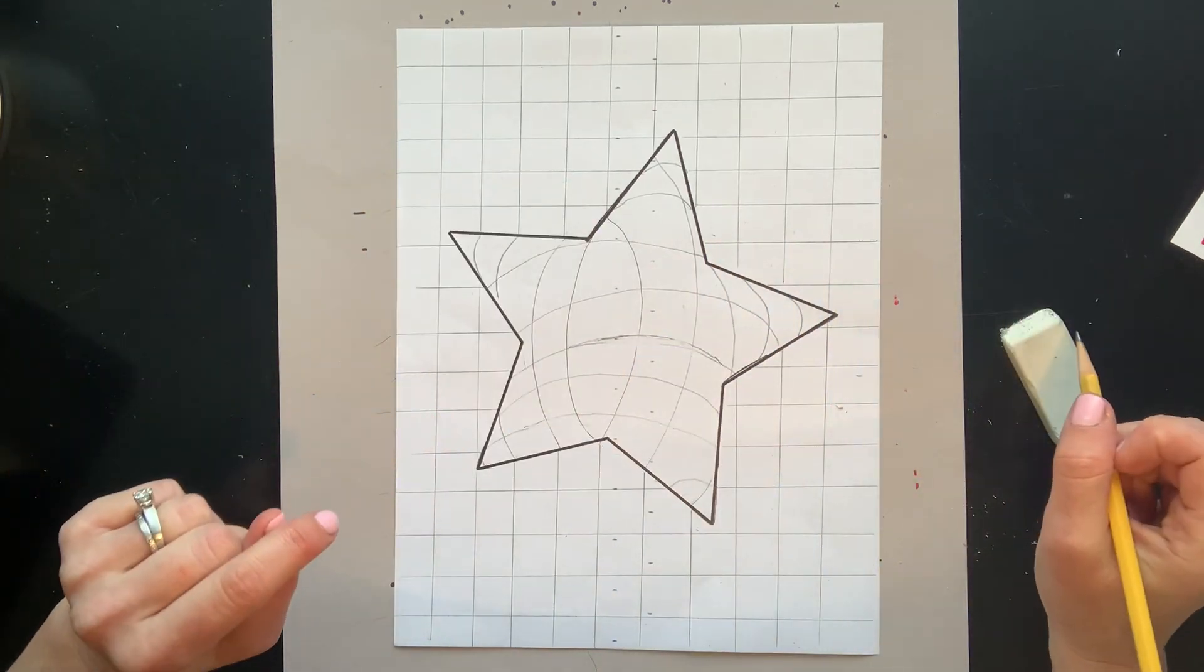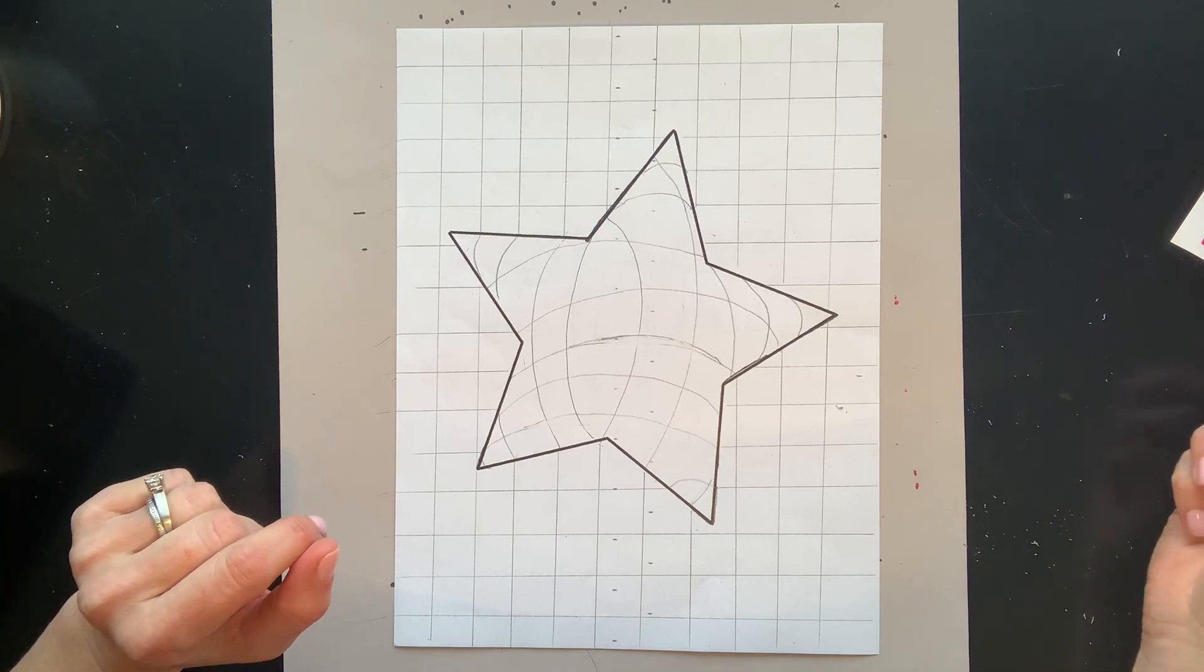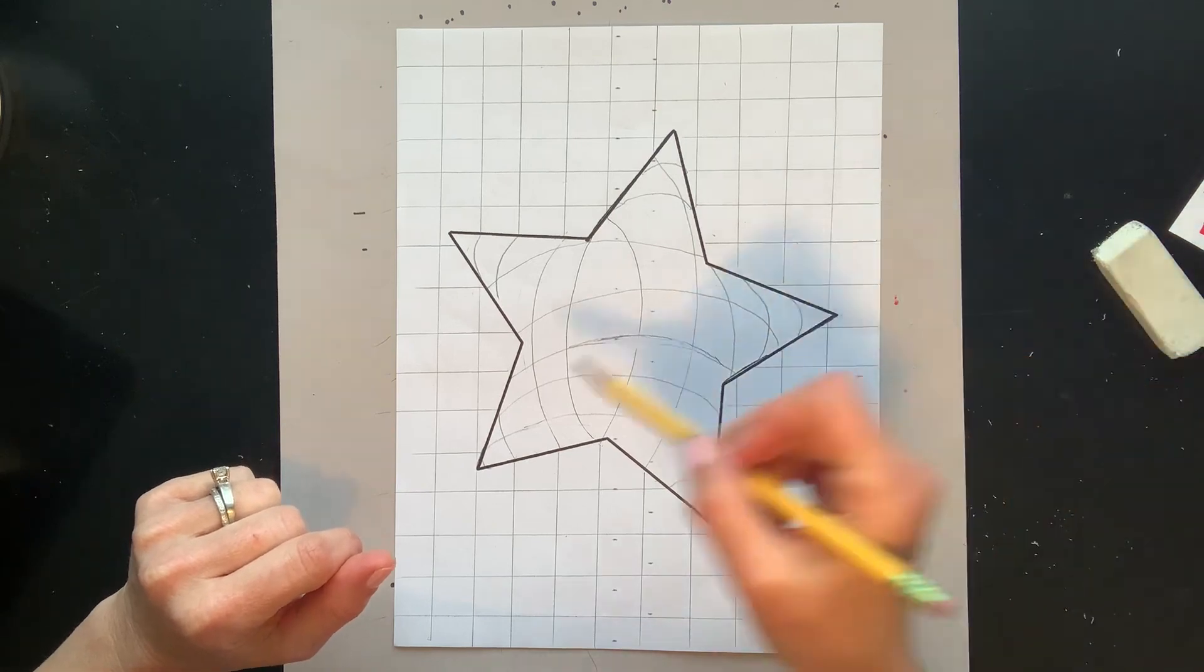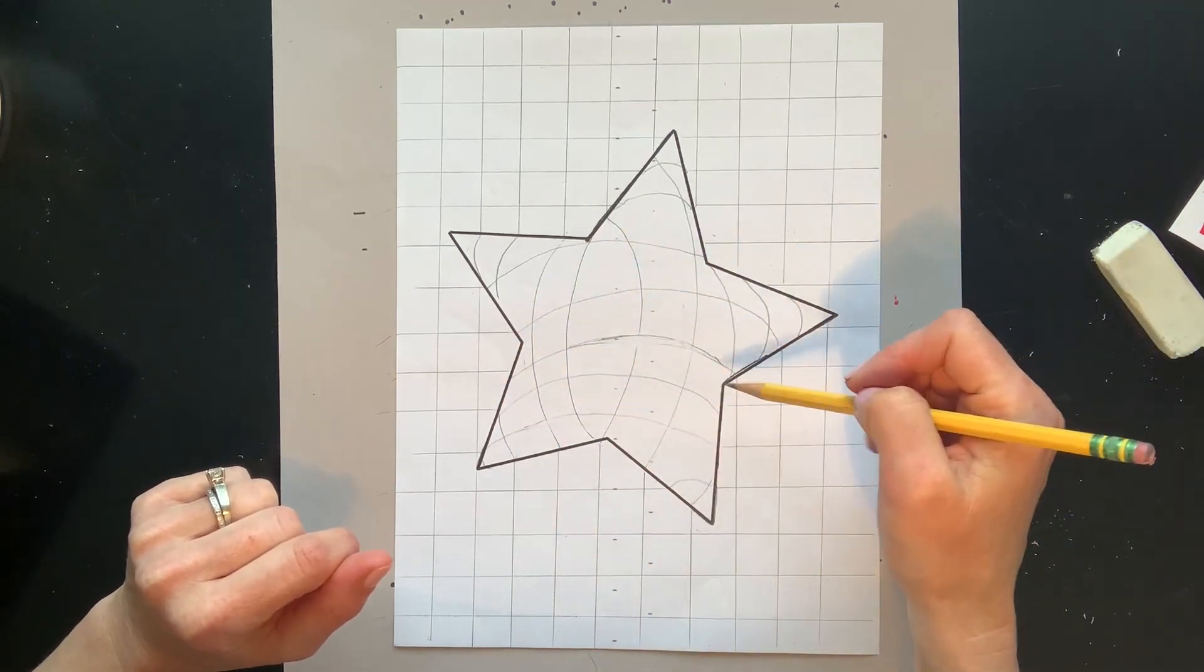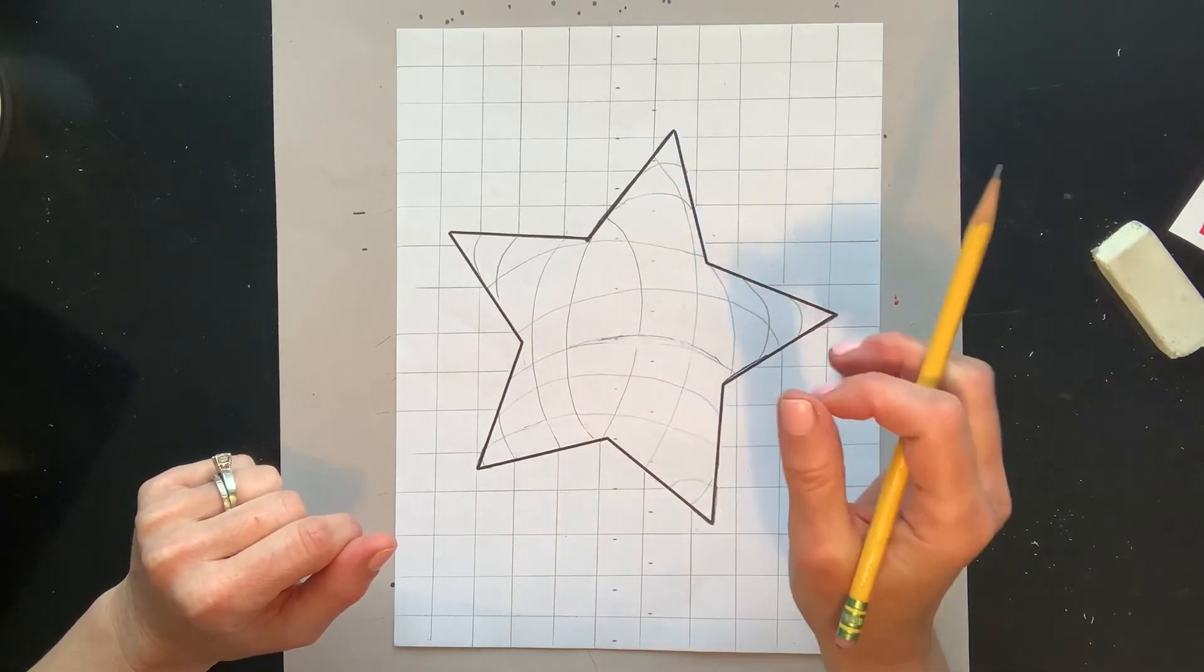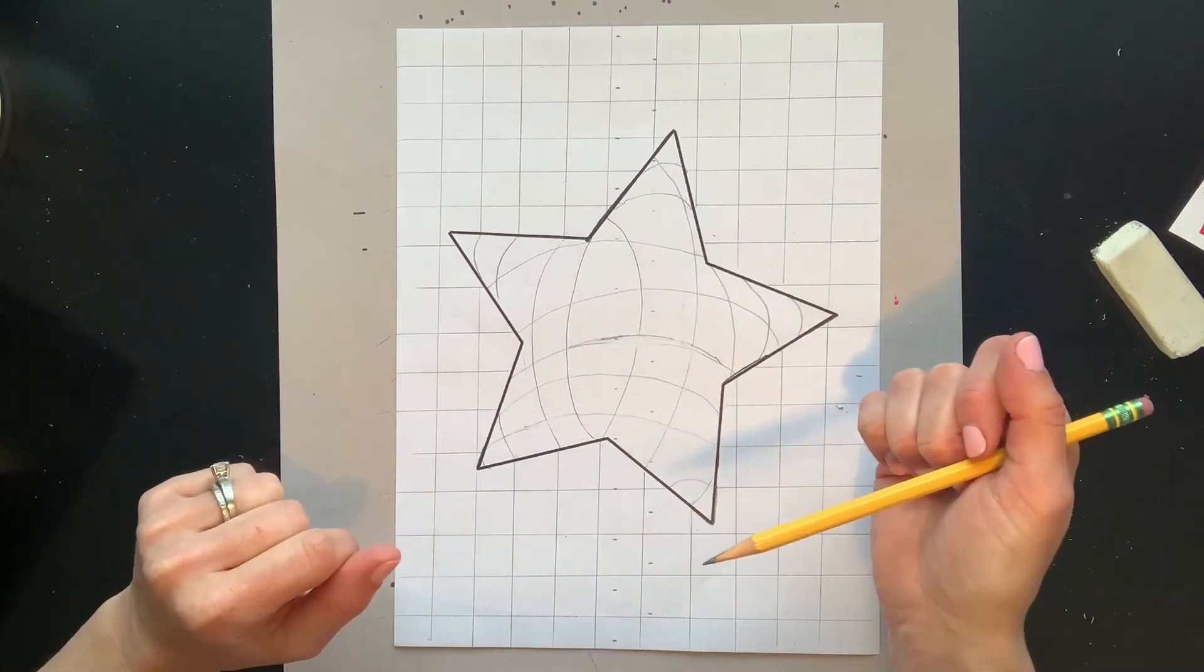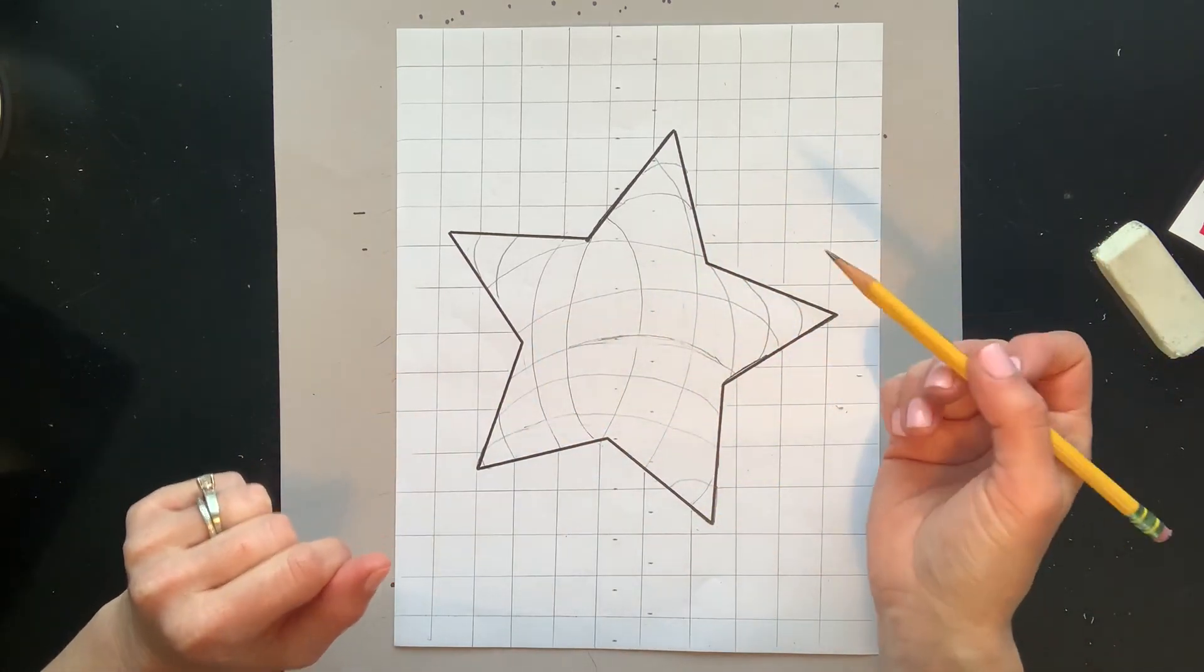Now what you're going to do is you're going to turn this into Google Classroom. I'm going to check your lines to make sure you use the ruler in your background and that you have curved lines inside your star. If I give you the okay, then you can go on to the next step. Otherwise, make your corrections and then you can go on to the next step.